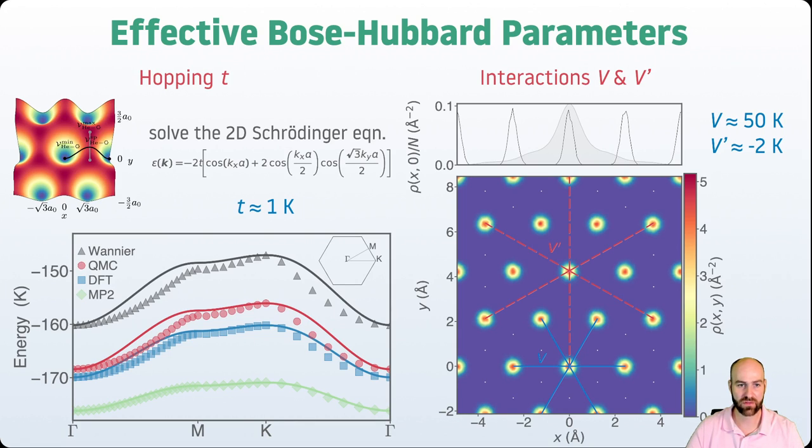And then for each of those, solve the resulting 2D Schrödinger equation for a single particle hopping in this potential. We can compare that with a tight binding approximation, so the data is the symbols and the tight binding corresponding to this expression is the lines. And from the bandwidth, we can extract what the hopping should be, and we find it to be of order one Kelvin. This is for this particular cut through the Brillouin zone.